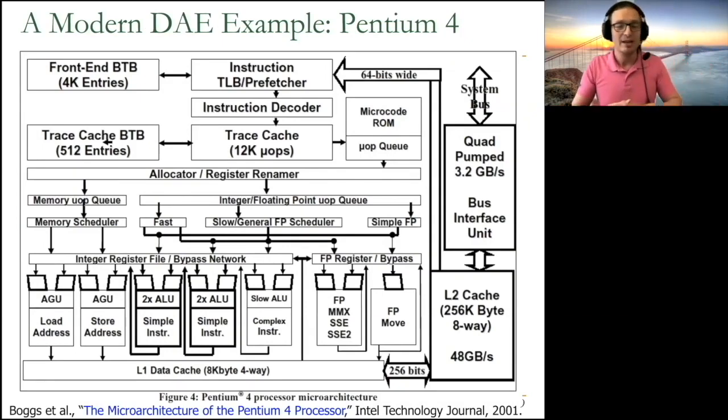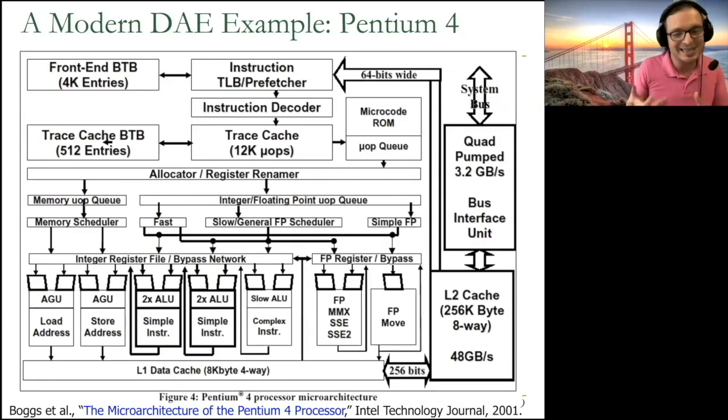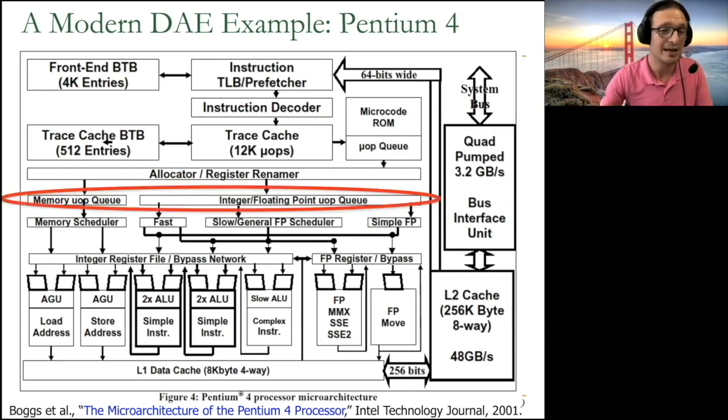Basically, the way it's described, it's not exactly employed in existing processors, but in principle, decoupled access and execute is employed in all processors that I know of. For example, this is the Pentium 4 processor internally. I'm not going to go through everything over here, clearly, but I'm going to point out this part. After the instructions are renamed and allocated to reorder buffer, for example, and registers, they go through a memory part and an execution part.